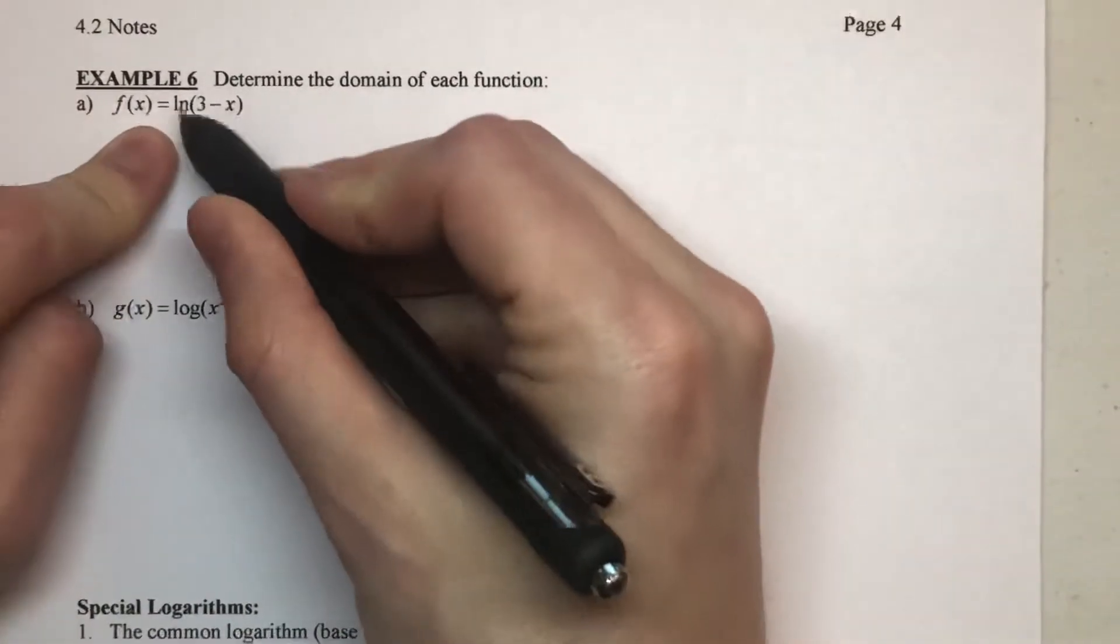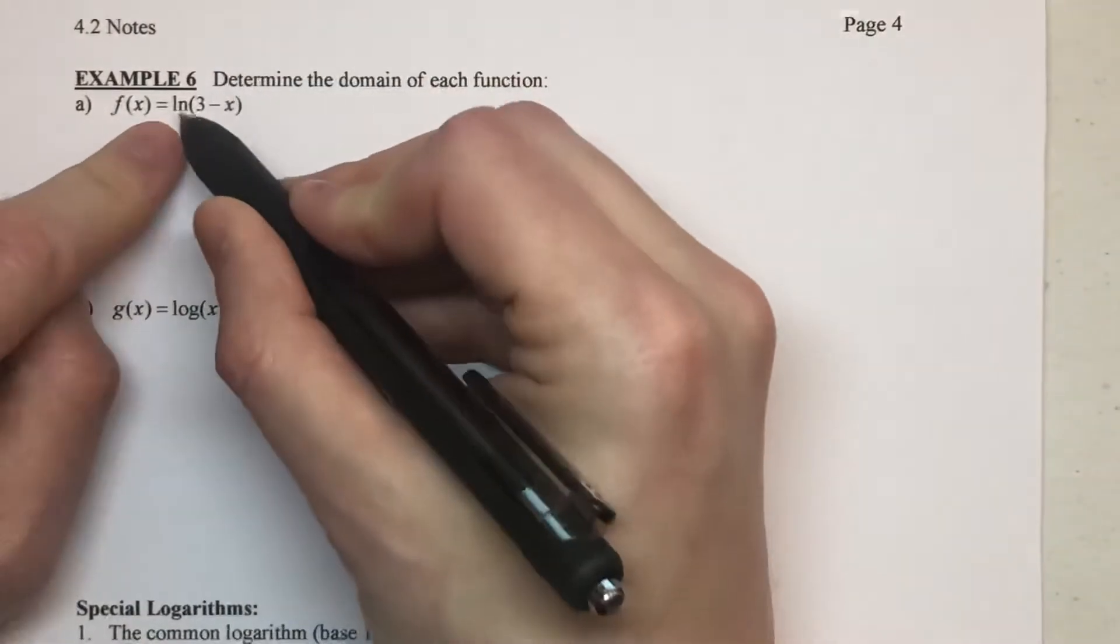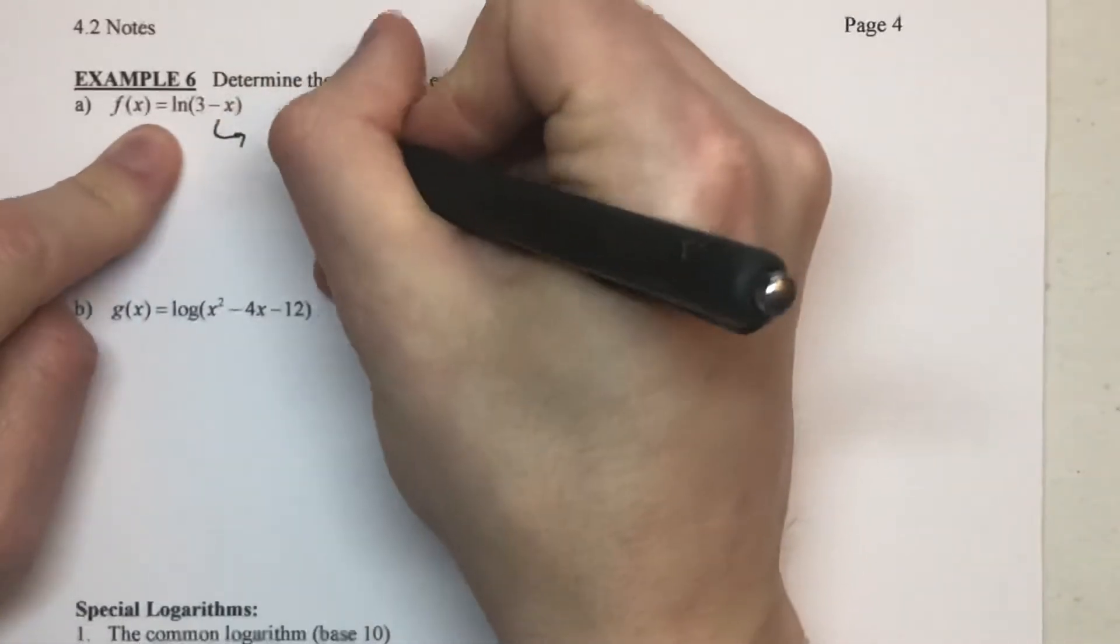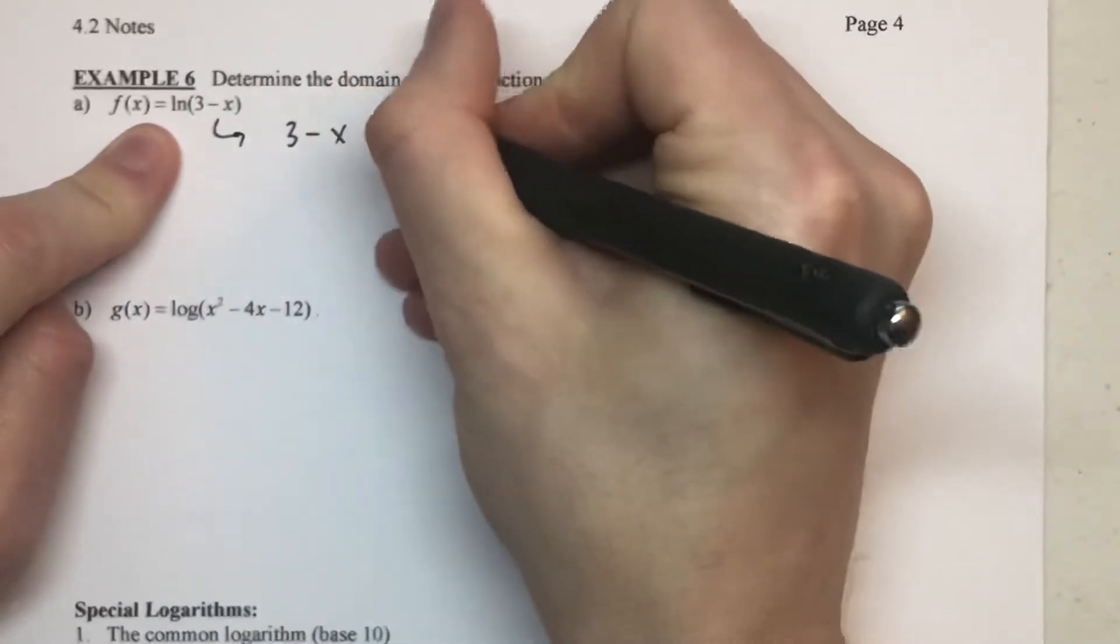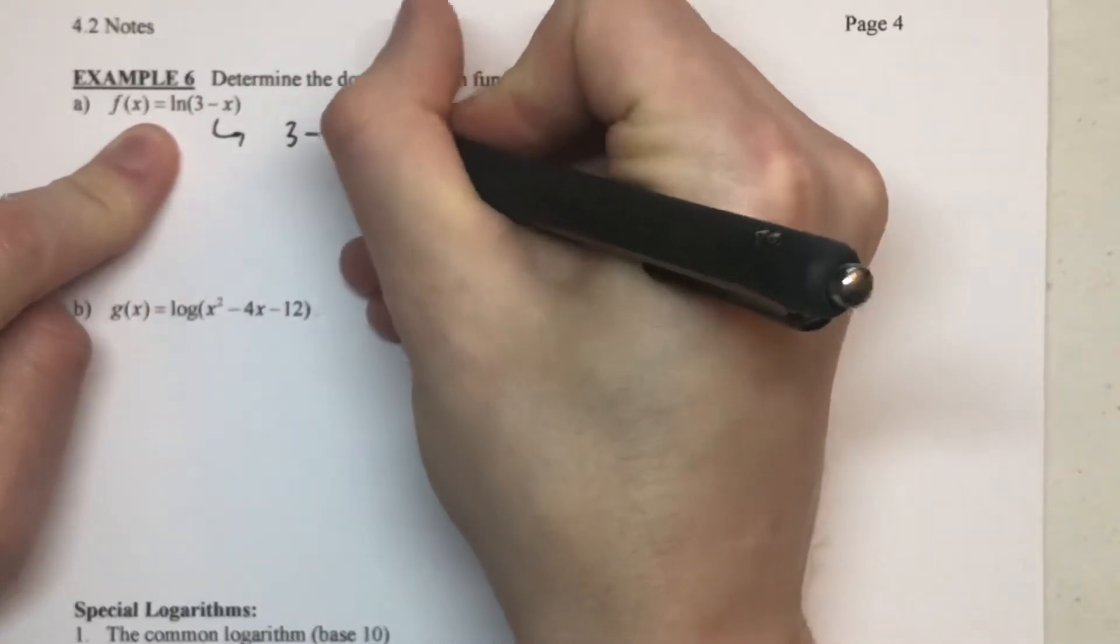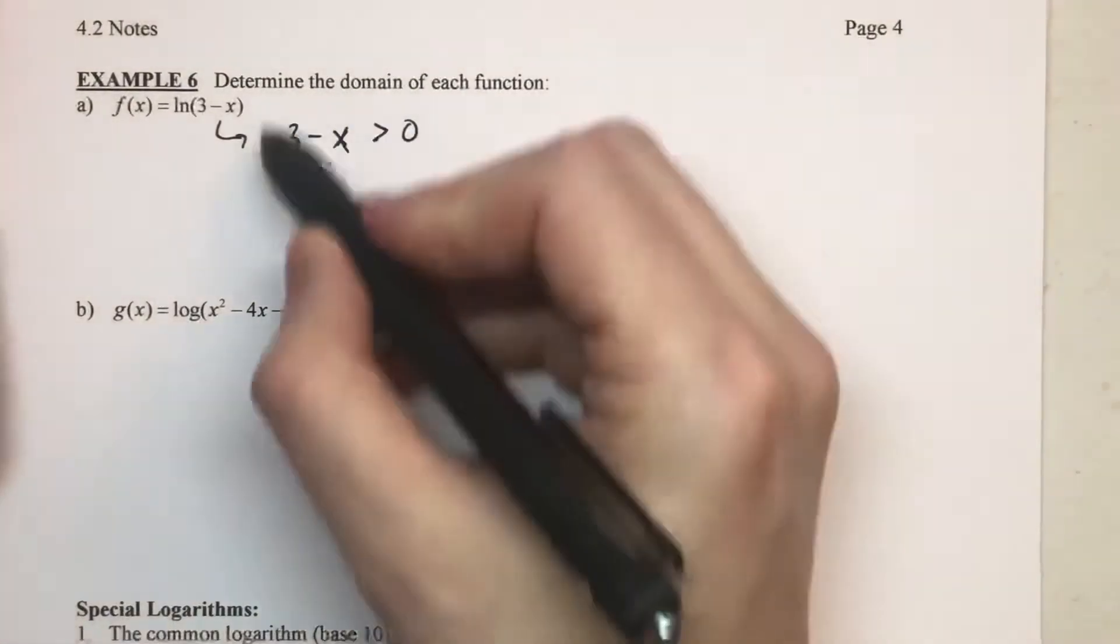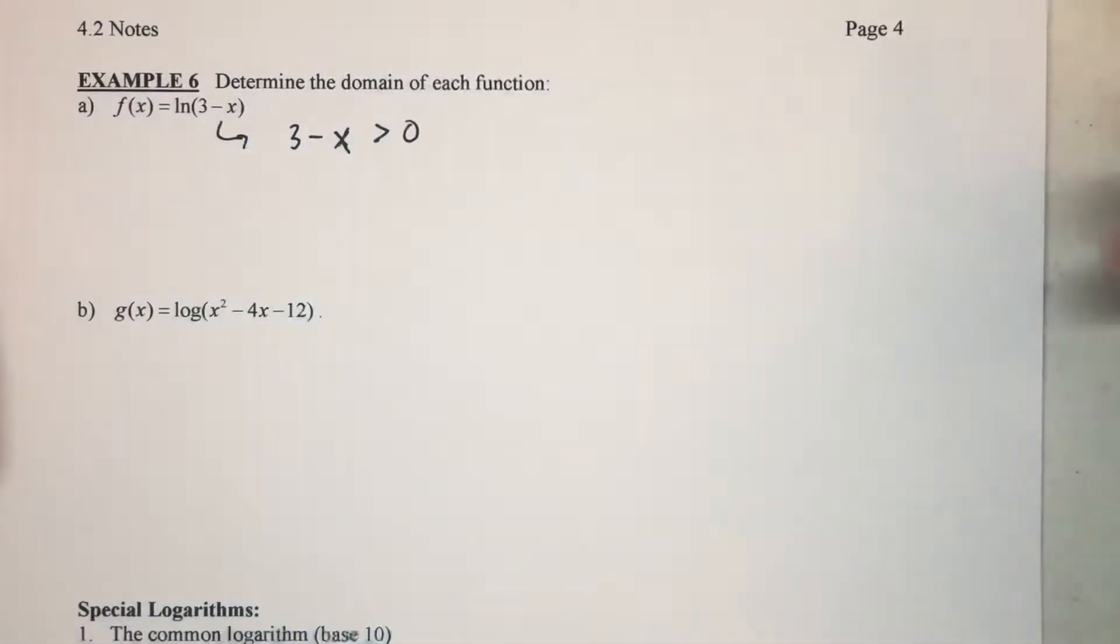Because if I've got a log, and remember ln is just a log, the log of three minus x, to think about the domain is to say I know that three minus x must be greater than zero. That needs to be a positive number. You're creating an inequality out of this question.